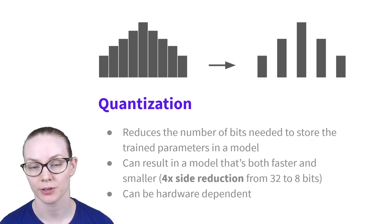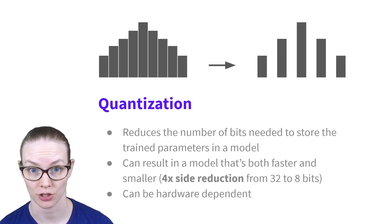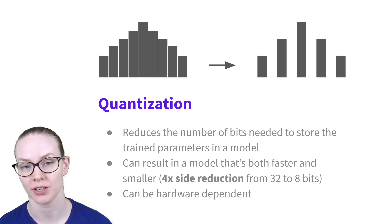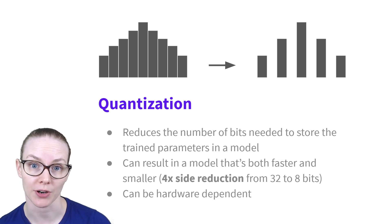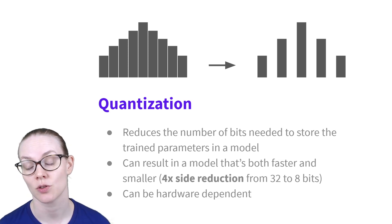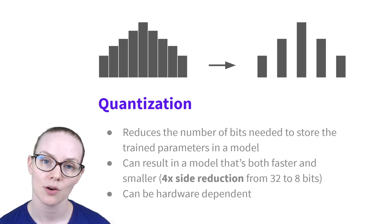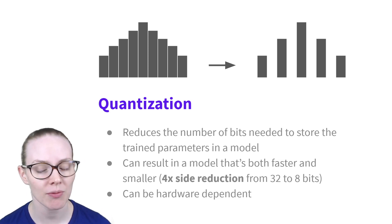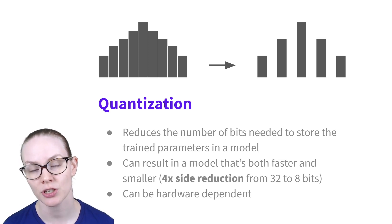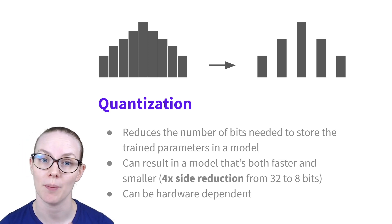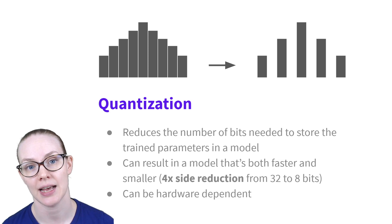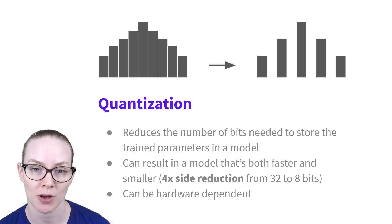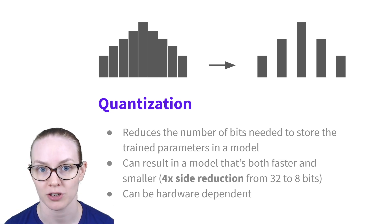One very common method for reducing model size is quantization. Quantization reduces the number of bits it takes to store different trained model parameters. It's very common to quantize the weights of models in particular. When done well, it can dramatically reduce the size of your model without really affecting performance. One very common transformation is to go from 32-bit floating point precision down to 8-bit integer precision. The biggest problem with quantization is usually that it's hardware dependent.